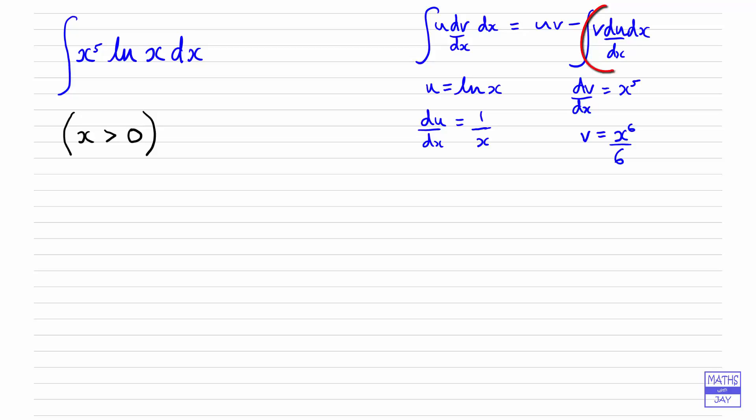But you'll see that when we multiply v by du by dx, all we're left with is a multiple of a power of x. So in fact it will be easy to deal with. So this is really the only kind of example where you don't let u equal the power of x.